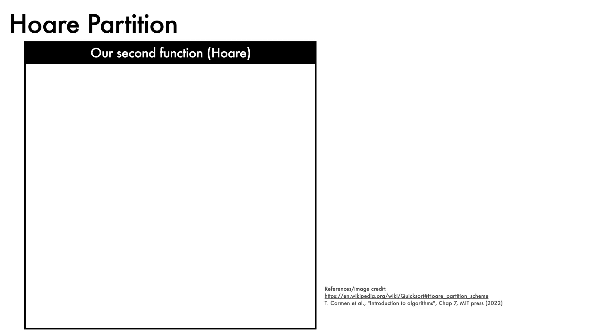The second partition function we'll look at is based on the original by Tony Hoare. We'll walk through an implementation in the style described by CLRS, which is a bit different to the original Hoare function, in that it doesn't use randomization, but it does capture the essence of the idea. This time, we select the lowest index as the pivot.